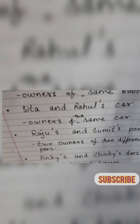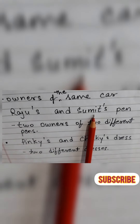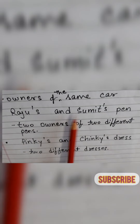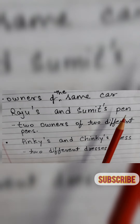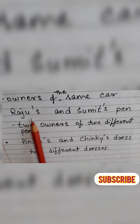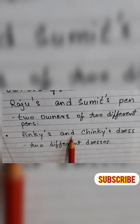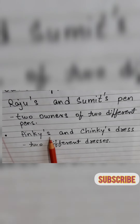But if two people have two different, separate items, we put apostrophe S on both names. For example, Raju's and Sumit's pen — Raju's pen is different and Sumit's pen is different. I am talking about both their pens separately. They are two owners of two different pens. If it were a single pen, apostrophe S would only go on Sumit: Raju and Sumit's pen. Same way, Pinky's and Chinky's dress — there are two different dresses belonging to two different girls.